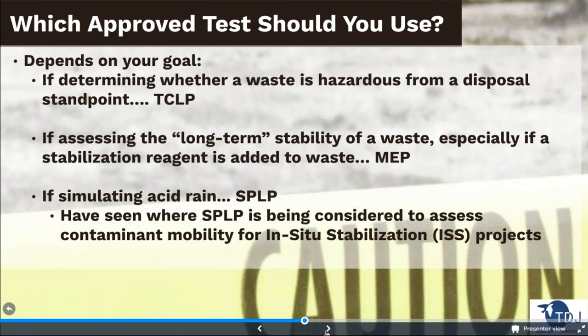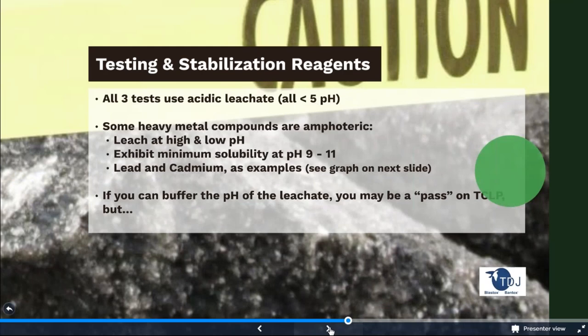So which test should I use? If it's for disposal of waste as hazardous or non-hazardous, it's only the TCLP test. If you want to assess long-term stability — especially if you have waste that's highly alkaline or you're adding a reagent like calcium oxide or magnesium oxide — you would want to run the Multiple Extraction Procedure. If you're simulating acid rain, run the Synthetic Precipitation Leach Procedure. We are also seeing more and more projects consider SPLP for in-situ stabilization projects where the waste with the treatment reagent will be left on site and exposed to precipitation from above.